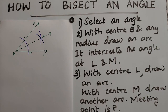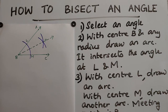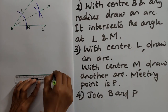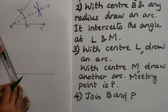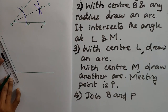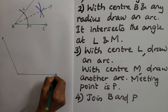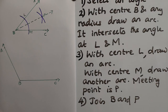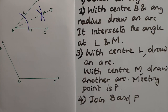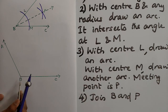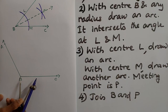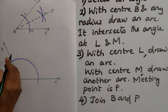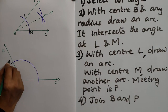If you are selecting an obtuse angle, the same method applies. Here I am selecting an obtuse angle and using the same name ABC. First step is done. Second step: with center B, place the metal tip on B and draw an arc. It intersects the angle at L and M.